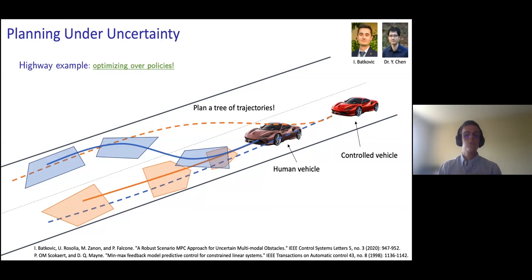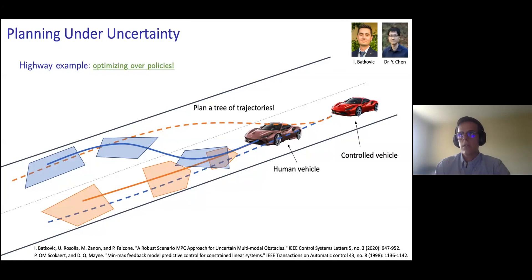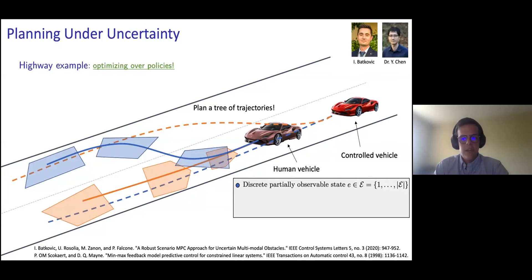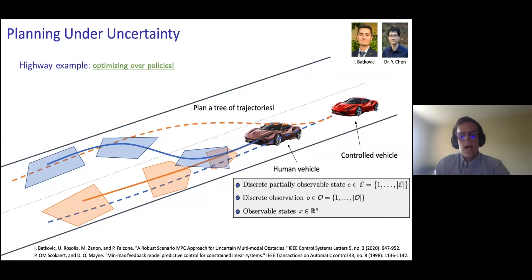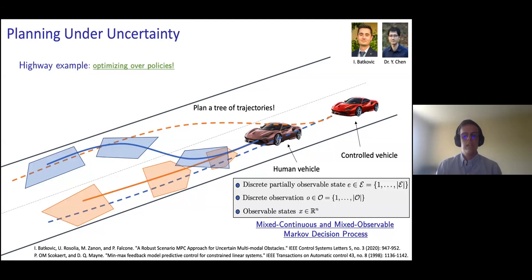At this stage, however, we do not have interaction between the controlled vehicle and the human vehicle. With Yu Shao, a doctoral scholar at Caltech, we kept working on this problem and modeled the interaction between the two agents using Markov decision processes. In particular, we introduced a latent discrete variable that models the intention of the human vehicle — in this example, lane keeping or lane changing — and we assume only a partial observation about this discrete variable. The state of the autonomous vehicle is observable and continuous. This allowed us to formulate a mixed-observable Markov decision process that can be reformulated as a deterministic finite-dimensional optimization problem, building on these three ideas.